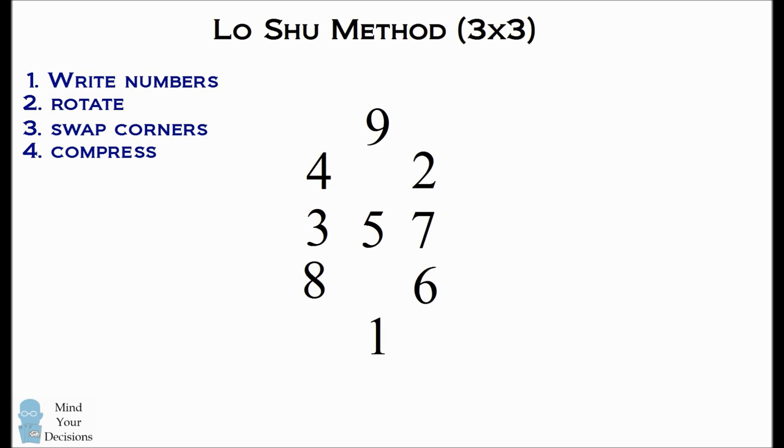The final step is to compress these numbers back into a square. So we'll bring the 3 and 7 in, and we'll bring the 9 and 1 in. And this is a magic square that's 3 by 3. All of the numbers add up to 15 in each row and each column, and the diagonals.